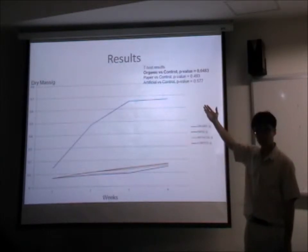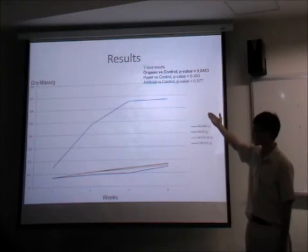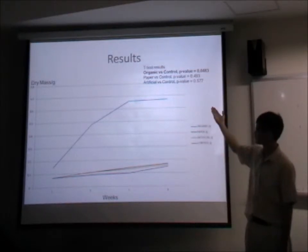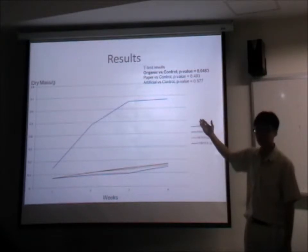For dry mass, the vermicompost organic setup is also higher than the rest, followed by the paper setup, then the control setup. The t-test results for the organic versus control setup are statistically significant.